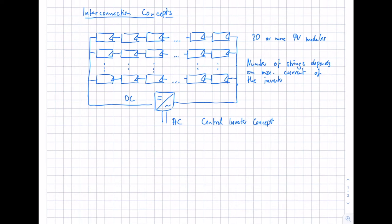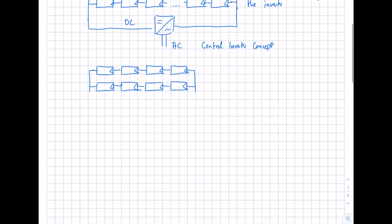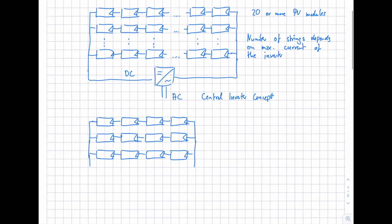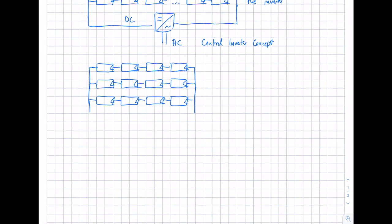A similar concept has just a small number of modules interconnected in series — let's say just four modules per string — and then a second string. Again, we need a large inverter able to handle this interconnection concept with a smaller number of modules in series. In this case, the PV modules have a higher MPP voltage compared to the first example, which is typical for thin-film modules.